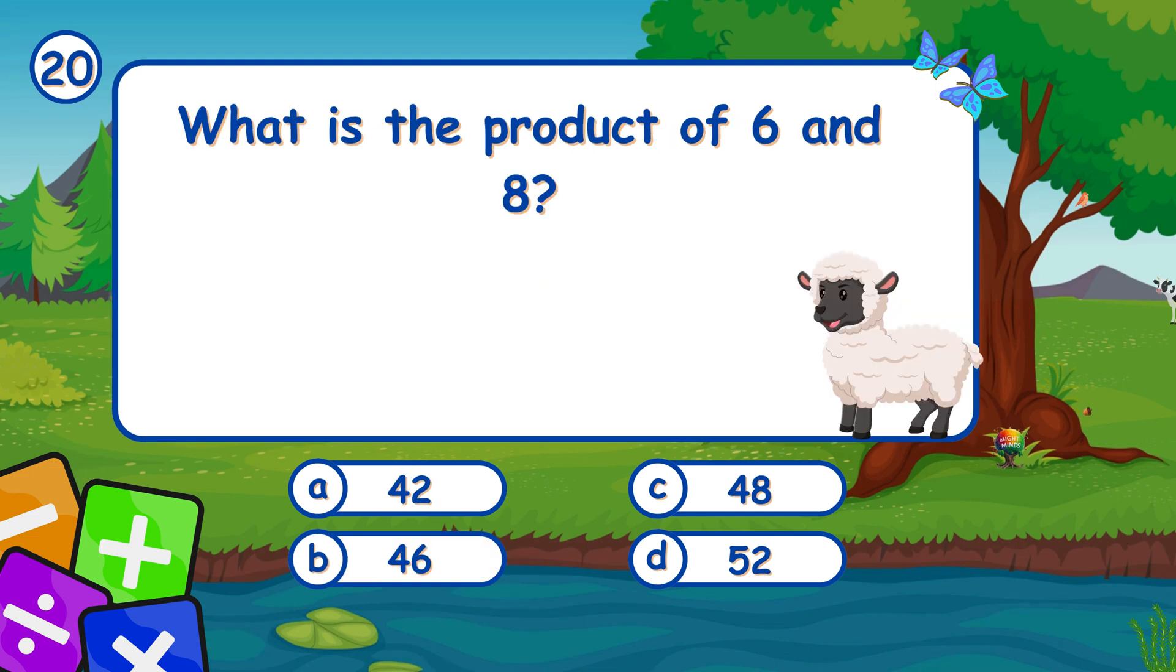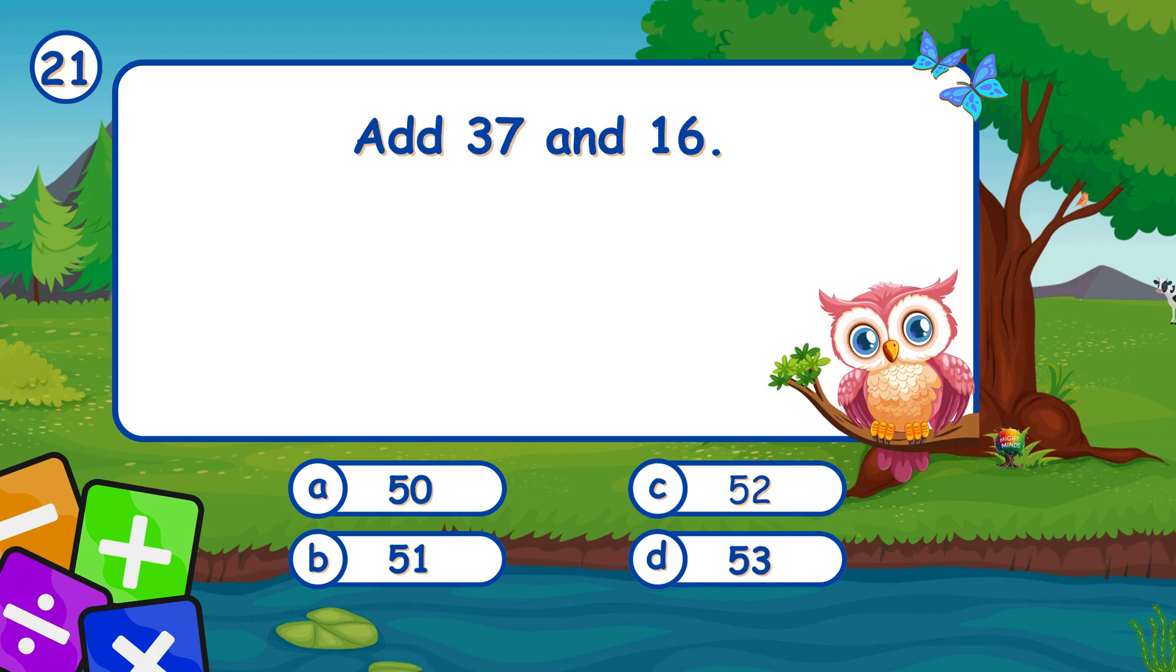What is the product of 6 and 8? It's C, 48. The product of 6 and 8 is 48. Add 37 and 16. It's D, 53. Adding 37 and 16 gives 53.